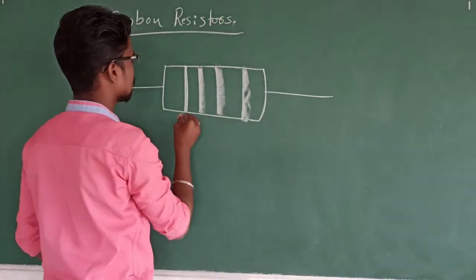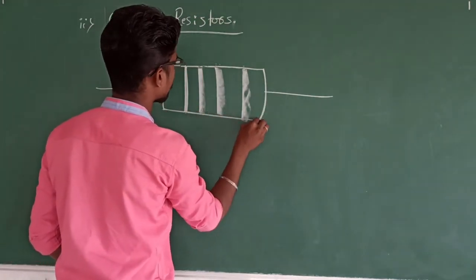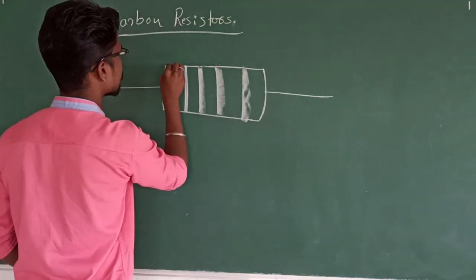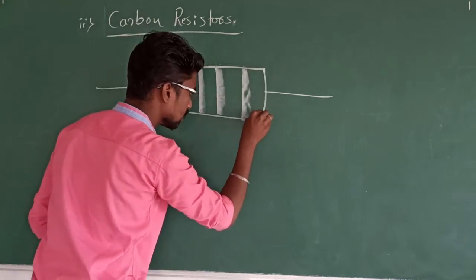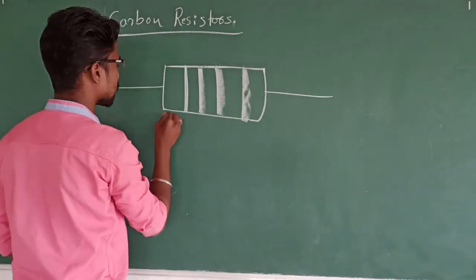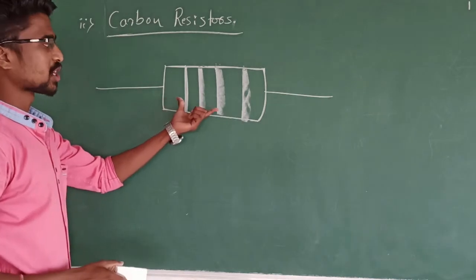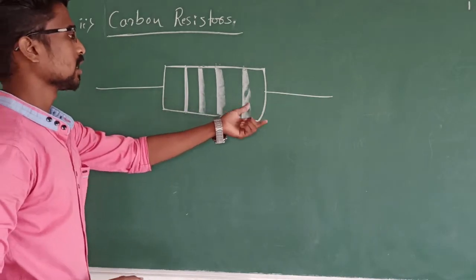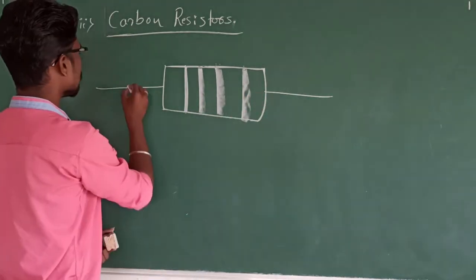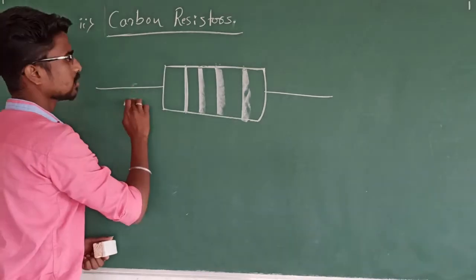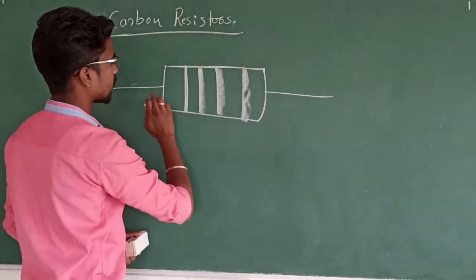A carbon resistor is a resistor made up of carbon. It is very low in price, cylindrical in shape, very compact, and provided with two electrical wires for connection.